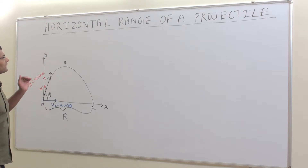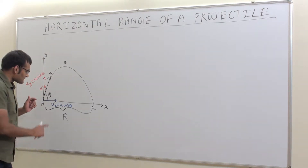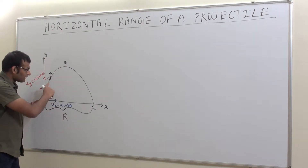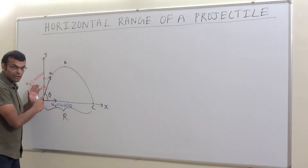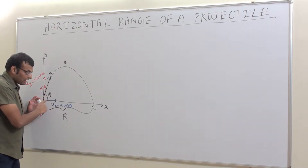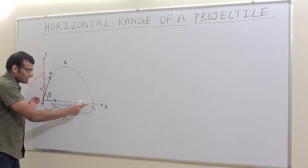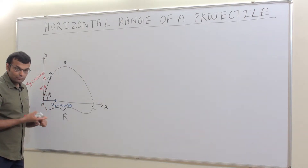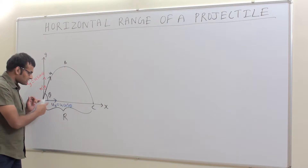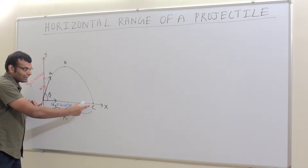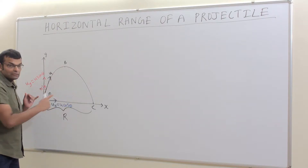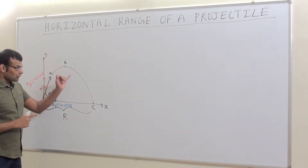How do we calculate the horizontal range? The time taken by the ball when thrown at angle theta to travel from point A to reach point C — we should observe that the displacement from A to C is a straight line, and the time taken is actually the time of flight of the ball to reach point C.